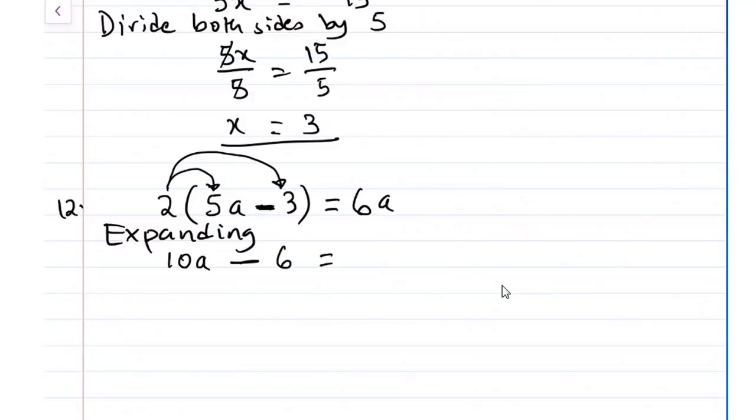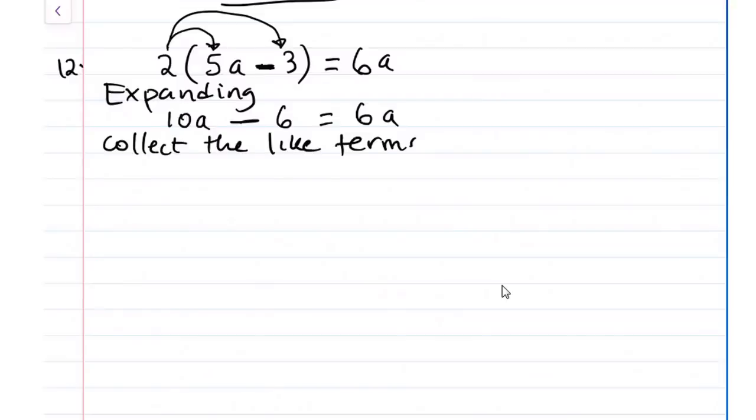And for us to be able to solve this further, we have on the right hand side another variable with coefficient. So the best thing to do here is that we want to collect the like terms. So our like terms will make us to subtract 6a from both sides. So that will be 10a minus 6a minus 6 equals to 6a minus 6a. 10a minus 6a will give us 4a. So we have 4a minus 6 equals to 0.